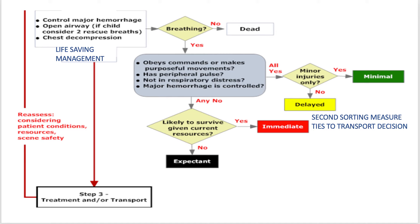Treatment and transport is the third step, usually coordinated by the first EMS unit on scene. They create the lanes of triage and eventually separate into treatment and transport roles, readily updating the triage or sorting criteria — either downgrading each category from minimal to delayed, delayed to intermediate, or intermediate to expectant. Patients are then passed off to oncoming or arriving EMS transport, either from a staging area or being dispatched en route.